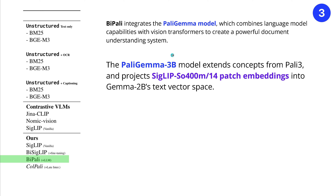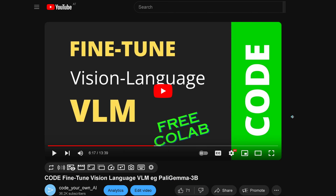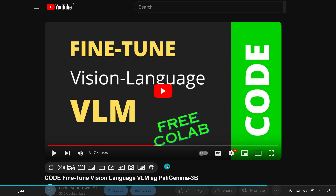If you want a detailed look at PaliGemma, have a look at the publication — it is real nice. But for the patch embedding, I would recommend reading this document from January 2024 by Google DeepMind Switzerland — they show exactly the deeper insight into these patch embeddings. This is the literature for you. If you say, okay, PaliGemma 3B, how can I fine-tune now this vision language model on my particular data? I have a video for you from some weeks ago where I showed you the code to fine-tune your vision language model, using the PaliGemma 3B model for the fine-tuning.